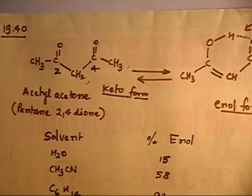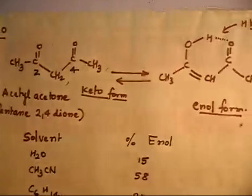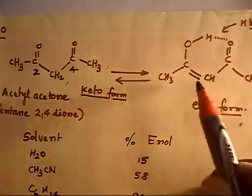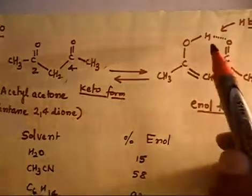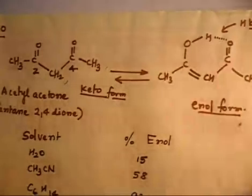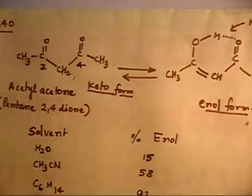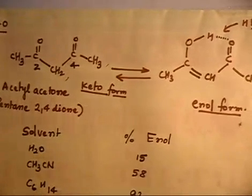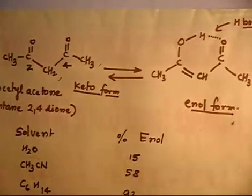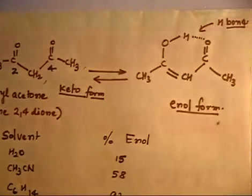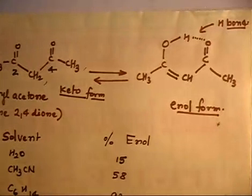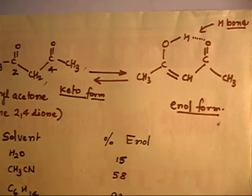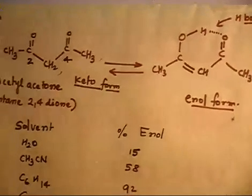The enol form will have a carbon-carbon double bond and an oxygen-hydrogen bond. Write down the keto form and the enol form. In the enol form, you will also have intramolecular hydrogen bonding — show the double bond and the hydrogen bond clearly.